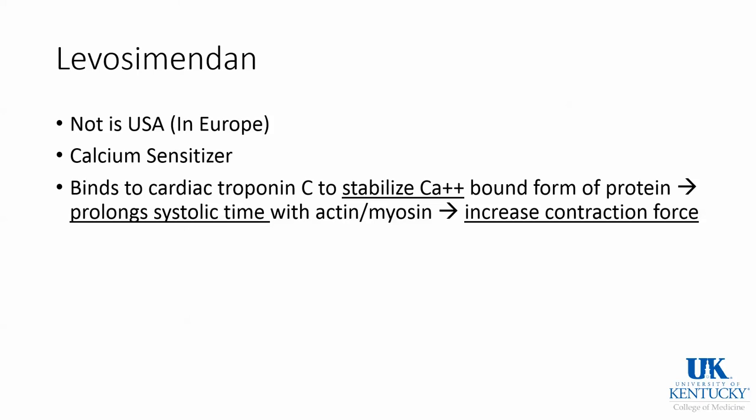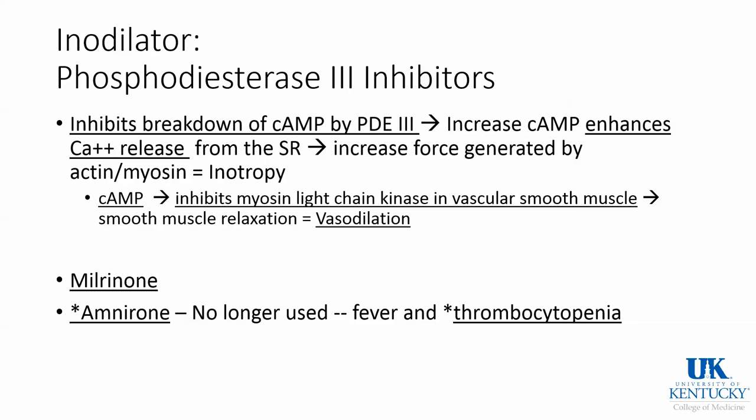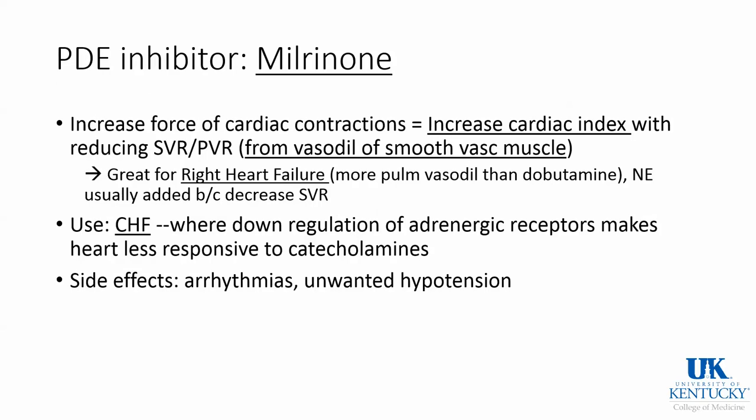One drug not used in the USA is a calcium sensitizer but does need to be mentioned. An inodilatator is a drug that increases contractility but also dilates some blood vessels. The specific one we use quite frequently in the ORs for people with right heart failure is milrinone, a phosphodiesterase-3 inhibitor. It inhibits the breakdown of cyclic AMP, which enhances calcium release, giving you inotropy, and also causes vasodilation. Amrinone used to be used but is no longer due to thrombocytopenia. Milrinone increases contractility, helping with cardiac index, and is great for right heart failure or any type of heart failure. Arrhythmia is the most common side effect.